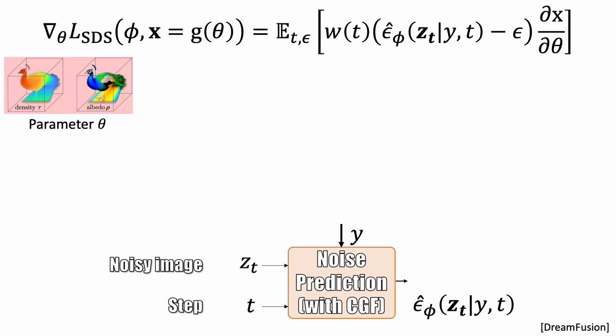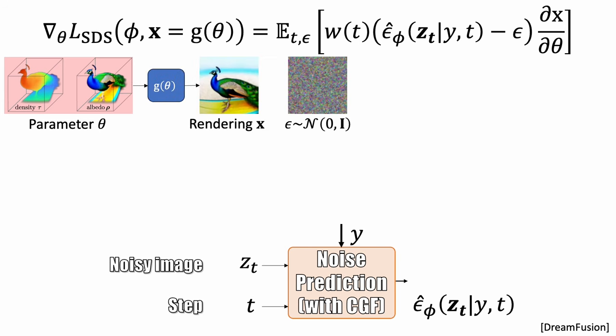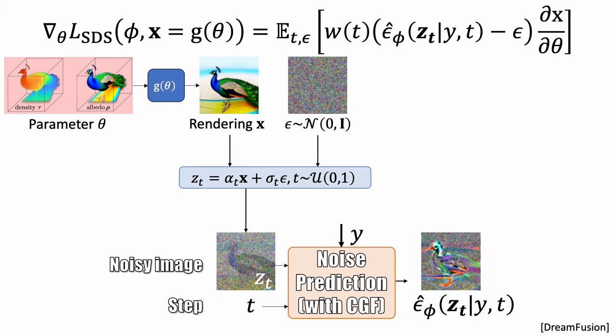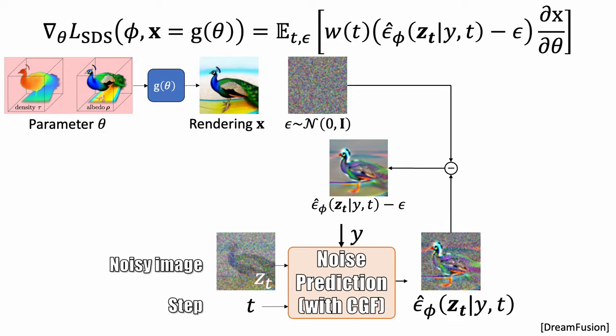Let's take a look at an example. Here we have a 3D representation, a radiance field parameterized by an MLP with parameter theta. We obtain an image x through rendering. Now we can sample noise from a Gaussian distribution and create a noisy version. Our pre-trained diffusion model then estimates the noise. We then compute the noise residual and use it as gradients to back-propagate for updating the parameter theta.